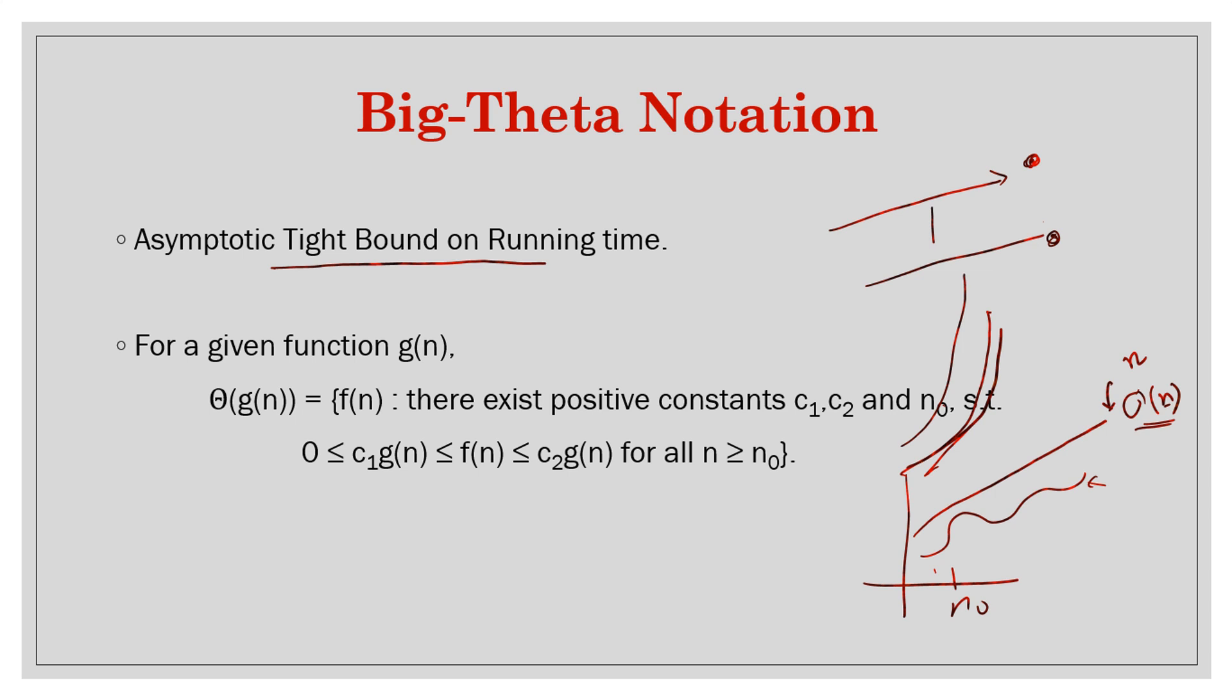Similarly in the case of Big-Omega notation, this function is smaller, this is also smaller, this is also further smaller. So it's not a tight bound. Big-Theta tries to give you a much more accurate estimate.